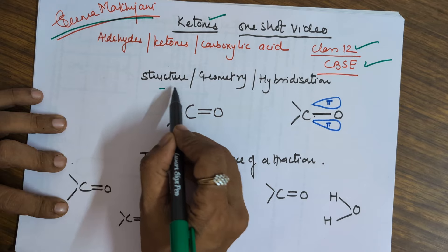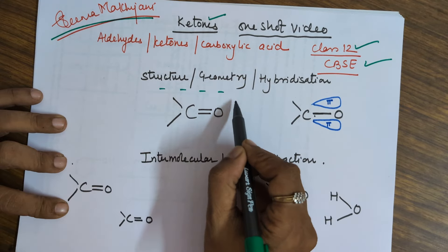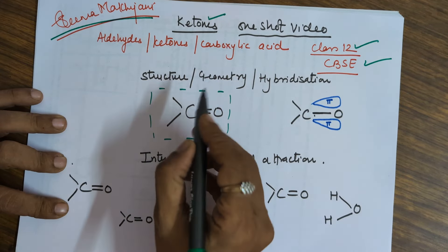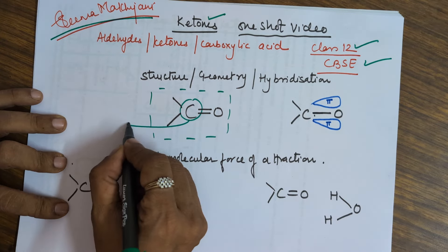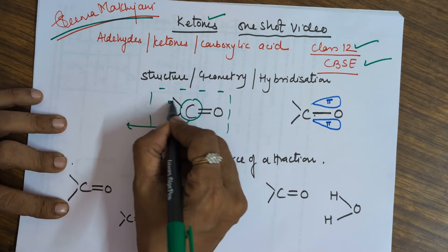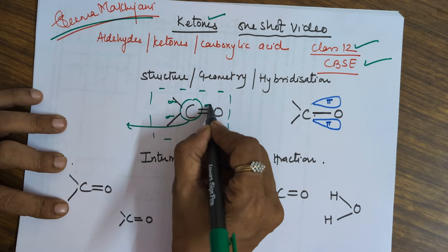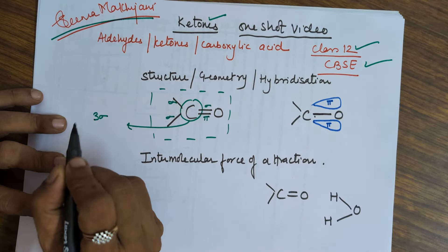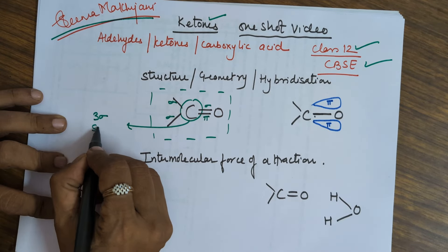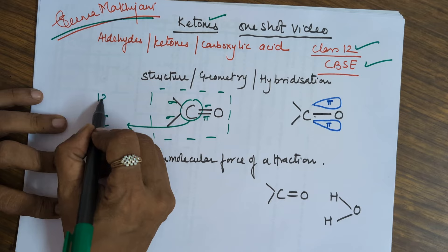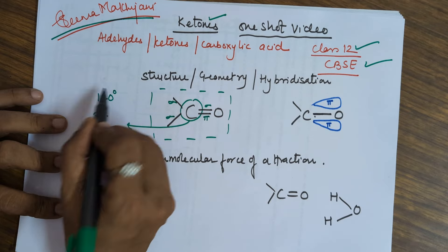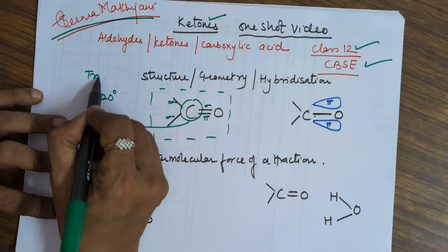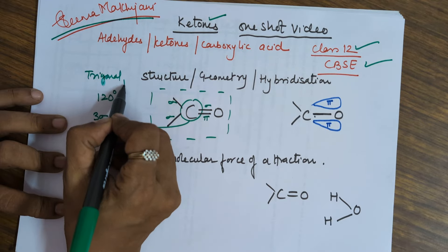When we talk about the structure of a ketone, it looks like this. In this structure, your carbon atom has got 1 sigma, 2 sigma, 3 sigma, and 1 pi. Since it has 3 sigma bonds, the hybridization becomes sp2, the bond angle becomes 120°, and the geometry becomes trigonal planar.